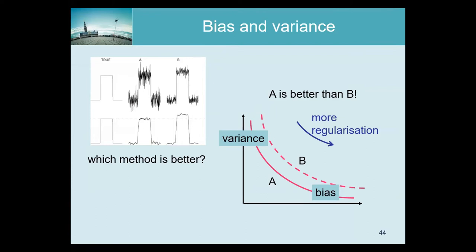There are many papers comparing those methods, and in some of these papers they say this method has higher variance but the other method has higher bias. That's actually not very good, because very often one can trade in bias for variance. Therefore you have to be careful to evaluate both methods for different variances and different biases if you're in a situation where you can exchange one for the other.